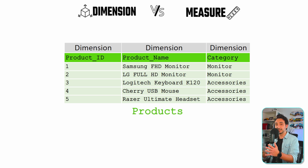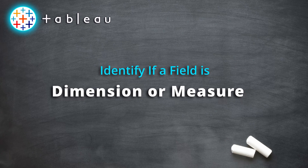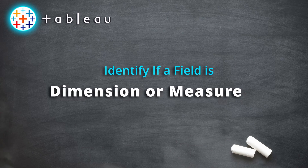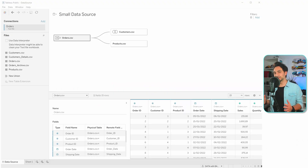For the Products table: product ID is an identifier, so it's a dimension. Product name and category are strings — non-numeric — so they are also dimensions. I hope this shows how, just by looking at the data, we can decide whether a field is a dimension or measure.